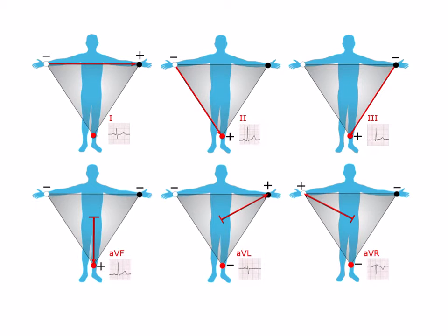On the other hand, we have our unipolar leads, which are augmented leads AVF, AVL, and AVR. Unlike the bipolar leads, these leads are only interpreted at one electrode, and hence gives us a different picture from the bipolar leads when interpreting our EKG.